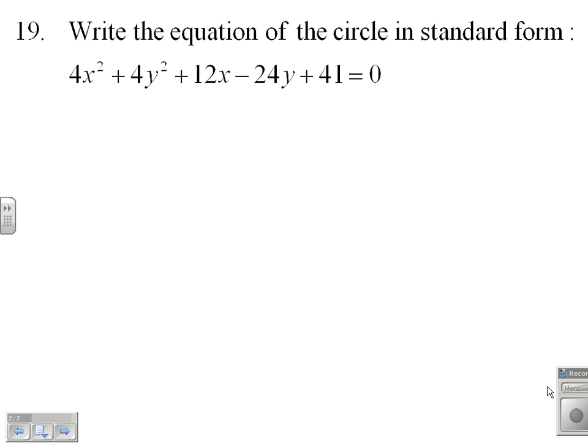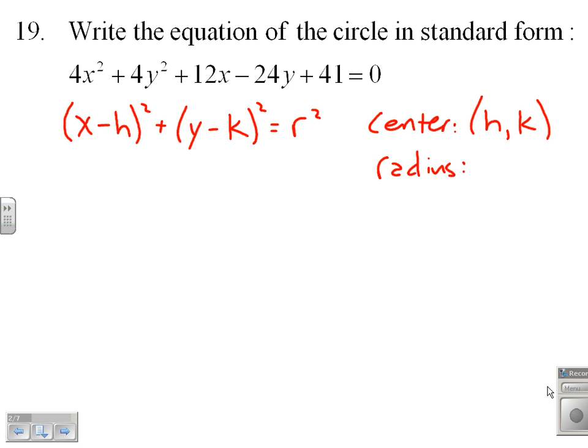Okay, let's write the equation of this circle in standard form. The first thing we need to be aware of is that standard form would be x minus h squared plus y minus k squared equals r squared, where the center of the circle is h, k, and of course the radius of the circle is our value for r.